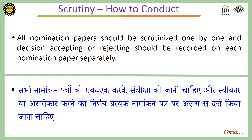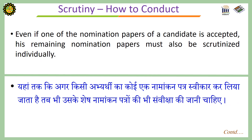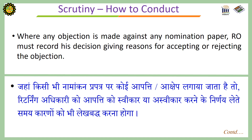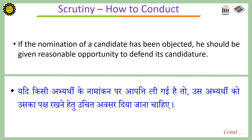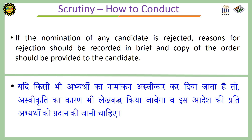All nomination papers should be scrutinized one by one and a decision accepting or rejecting should be recorded on each nomination paper separately. Even if one of the nomination papers of a candidate is accepted, his remaining nomination papers must also be scrutinized individually. Where any objection is made against any nomination paper, the RO must record his decision giving reasons for accepting or rejecting the objection. If the nomination of a candidate has been rejected, he should be given reasonable opportunity to defend his candidature, and reasons for rejection should be recorded in brief with a copy of the order provided to the candidate.